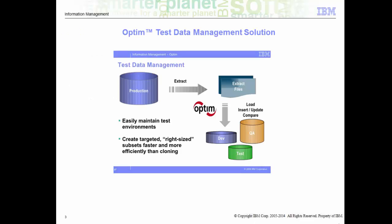The figure here represents an ideal extraction process. To the left is the production database from which Optum intelligently extracts data and stores it in the form of extract files, and these extract files are inserted into the target database. This helps in easy maintenance of test environments and also creates targeted right-sized subsets faster and more efficiently than cloning.